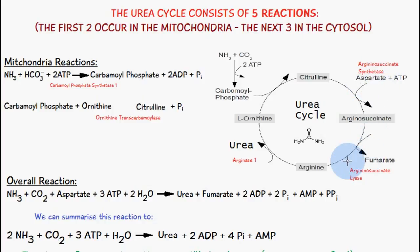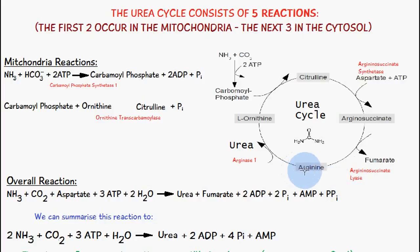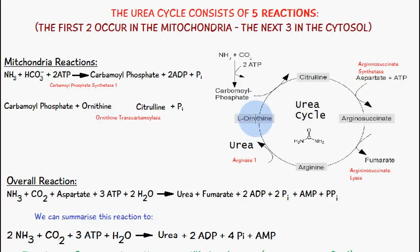Next, arginine is formed and fumarate is released, catalyzed by arginosuccinate lyase. Then arginine is converted to L-ornithine with urea also produced, catalyzed by arginase 1. The cycle then continues because this ornithine combines with carbamoyl phosphate to synthesize more citrulline using ornithine transcarbamoylase.